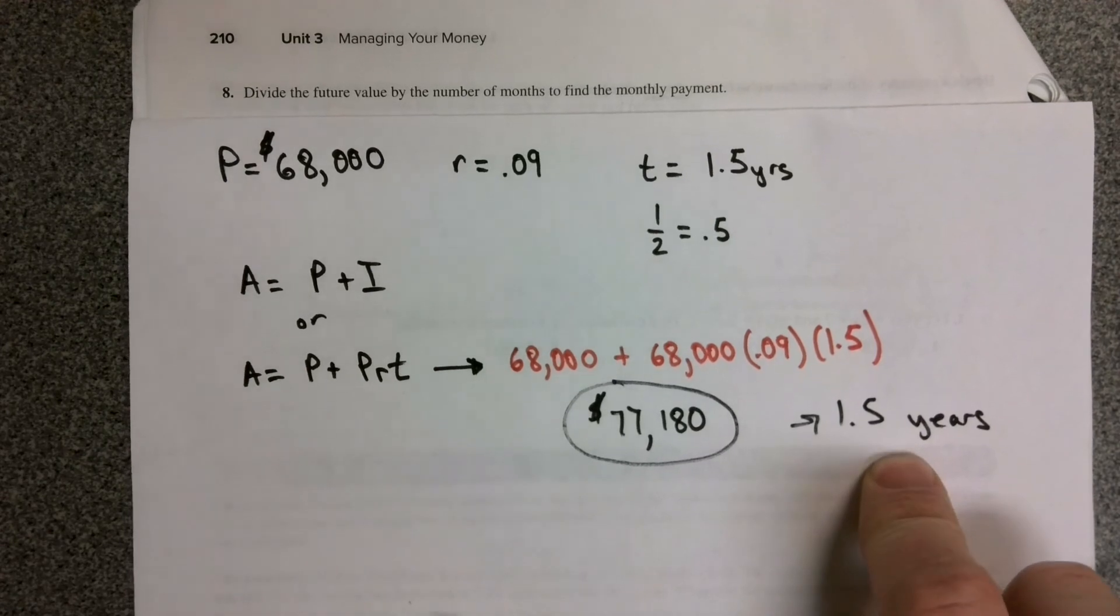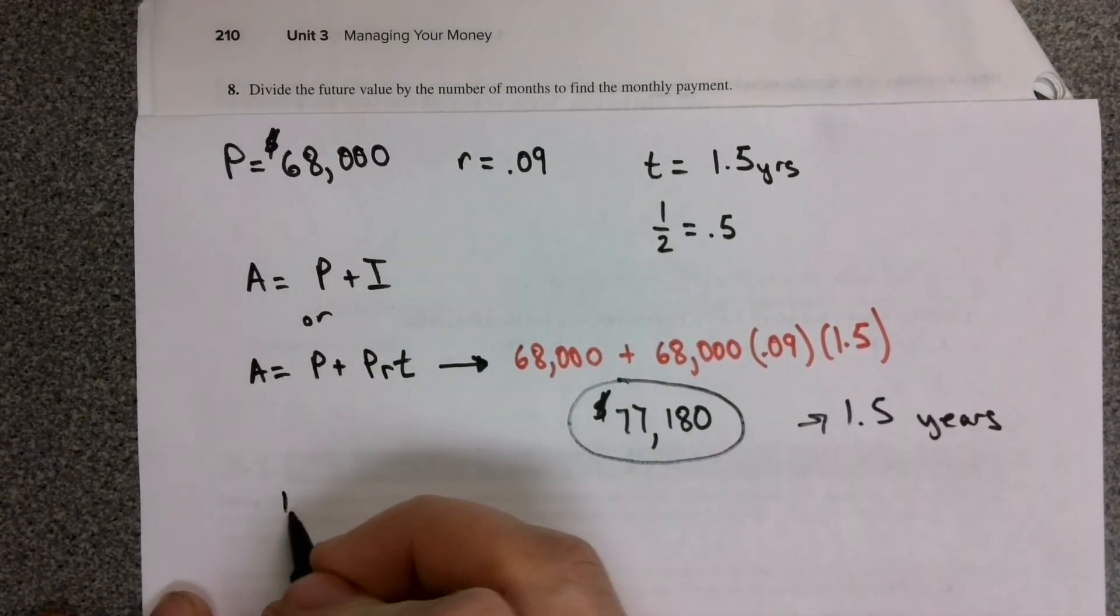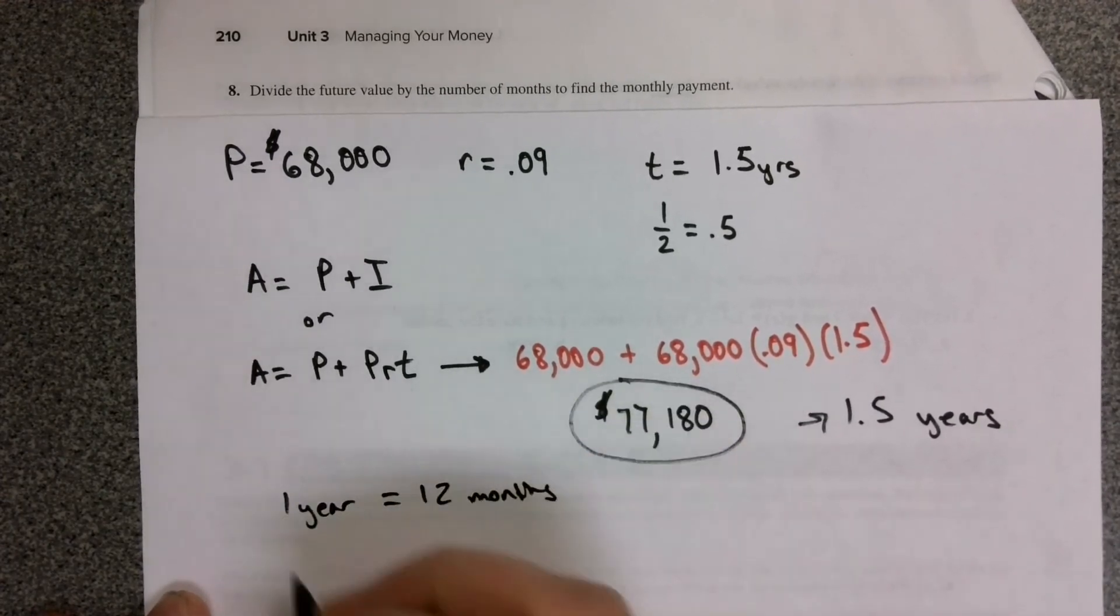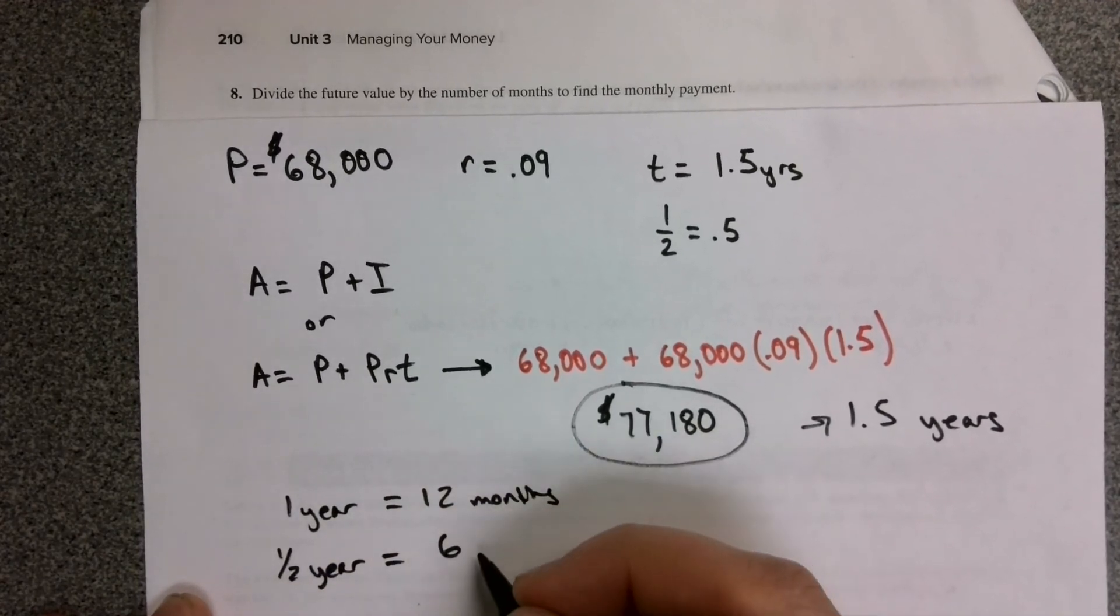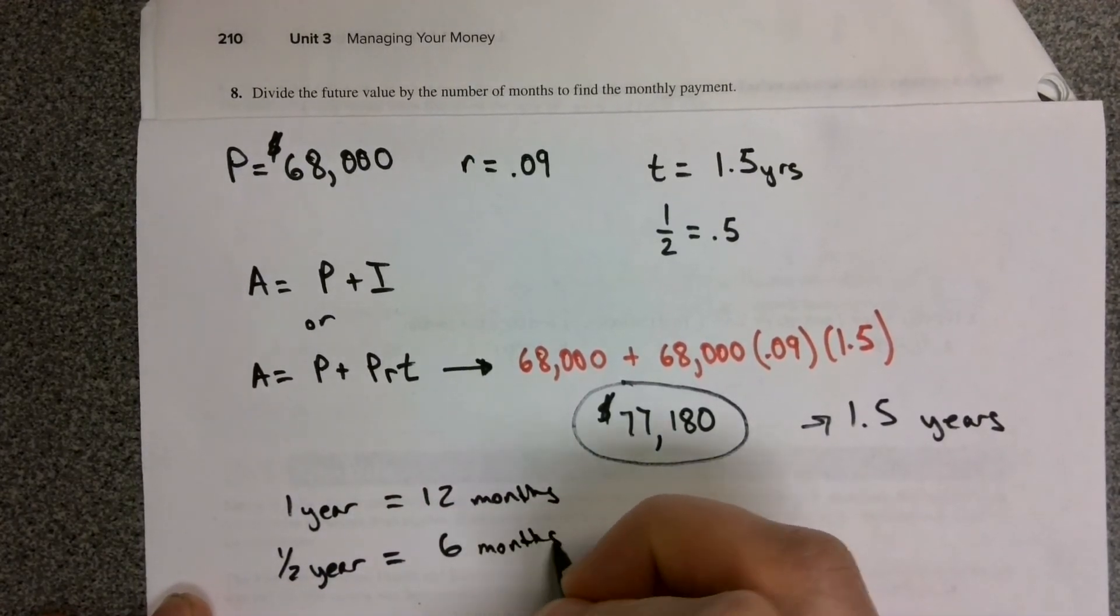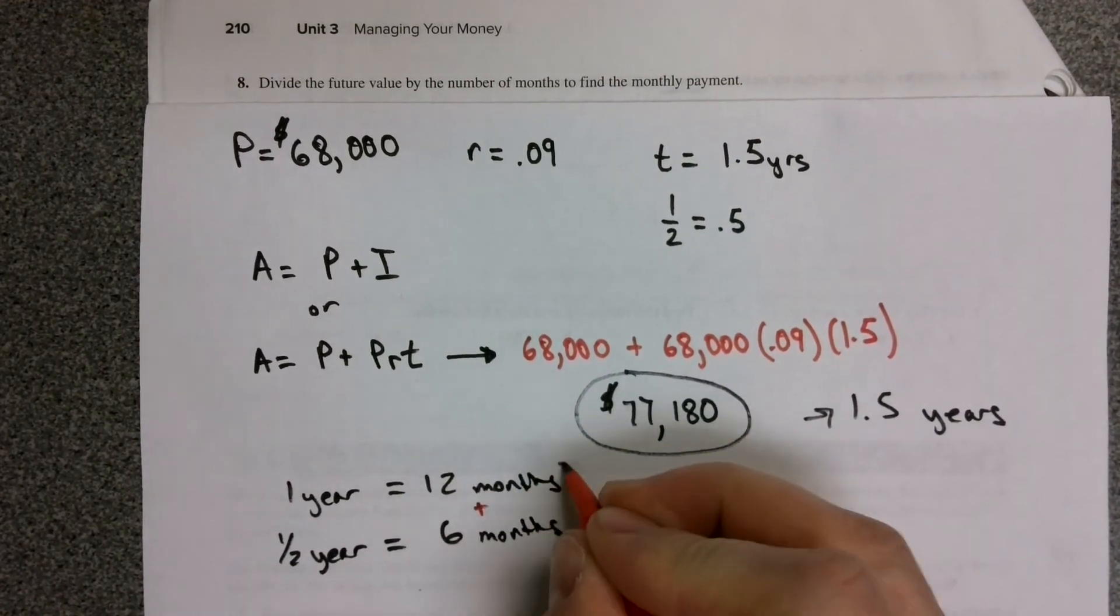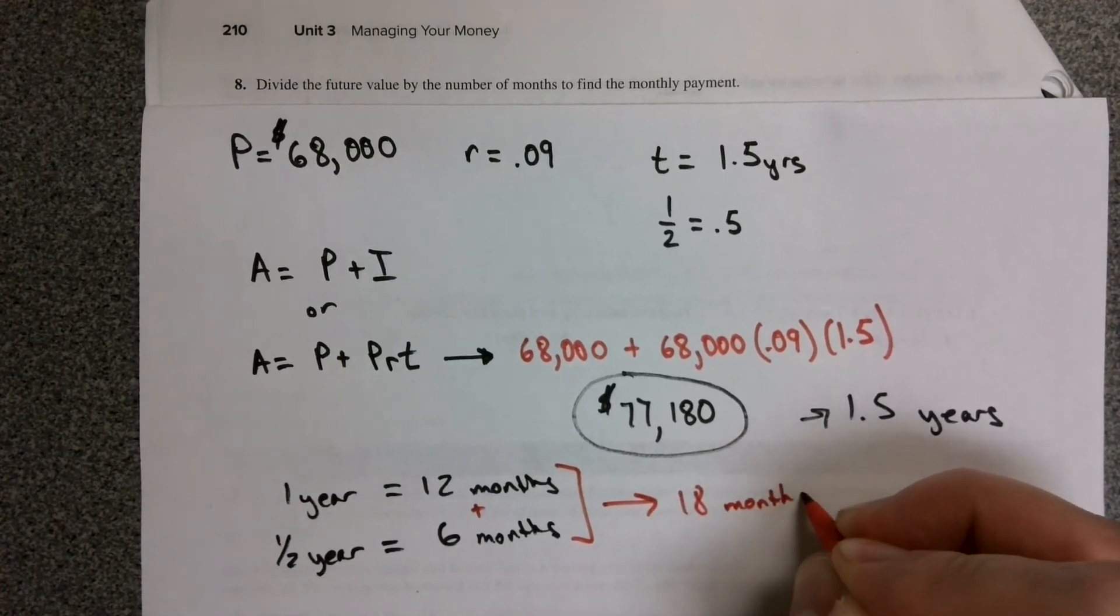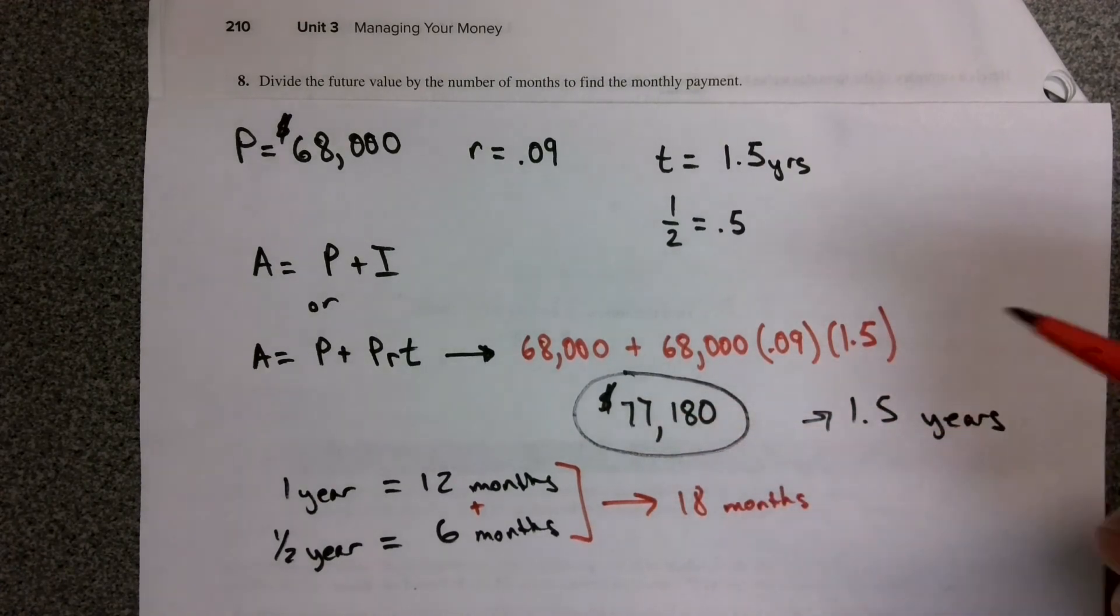What we need to know is how many months are in the 1.5 years. One year equals 12 months, and 0.5 of a year equals six months. If we add those two numbers together, we have a total of 18 months for which we can spread out this total amount that we owe the loan sharks.